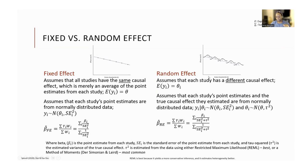The random effects meta-analysis, on the other hand, uses both the within-study variance — the standard error — and the between-study variance, which is represented by tau squared. The difference between the fixed effect and the random effects meta-analysis is that fixed effect looks only at the within-study variance, represented by the inverse of the standard error, while the random effects looks at both within-study variance and between-study variance, represented by tau squared.